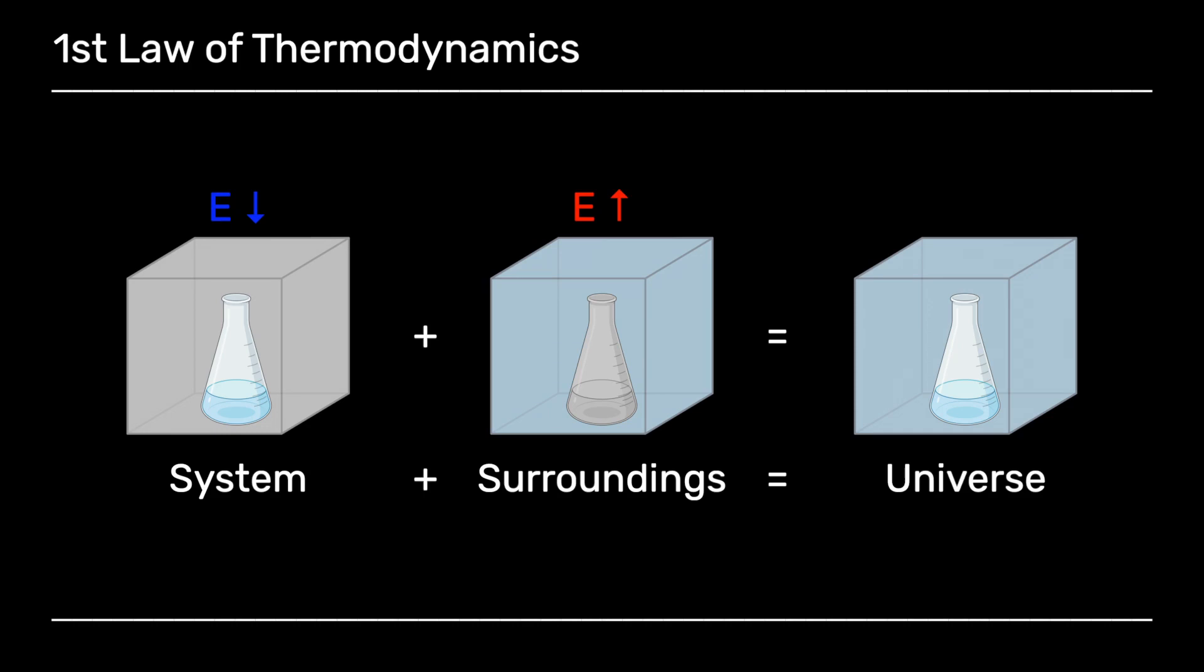So sometimes energy can be released from the system to the surroundings. So the system goes down, the surroundings goes up. But the total amount in the universe is the same. Or the other option is that the energy can be transmitted from the surroundings to the system. So the surroundings gone down, and the system's gone up. But the total amount in the universe has stayed constant.